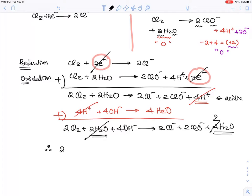So therefore, finally, the answer is two Cl2 plus four OH minus yields two Cl minus plus two ClO minus and two H2O. So therefore this is a basic solution - OH minus and then H2O is allowed.